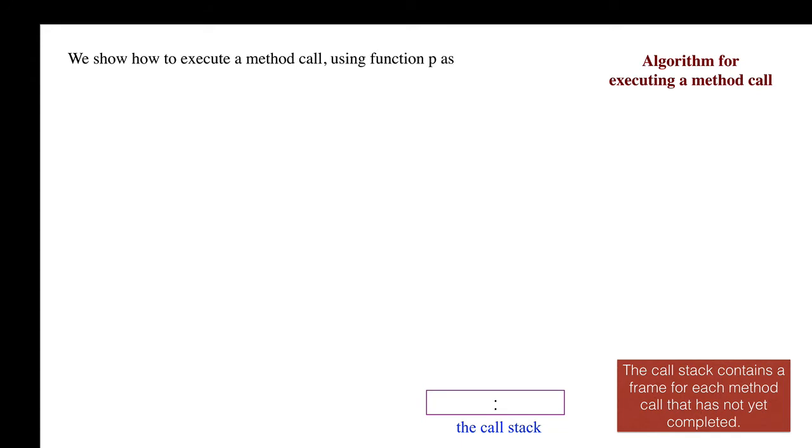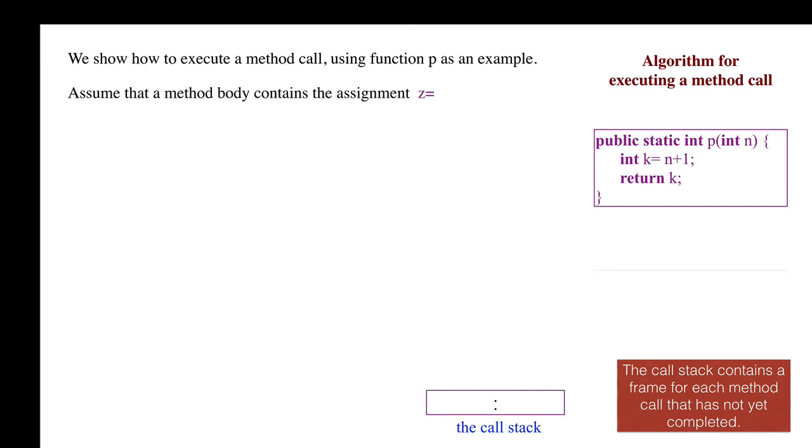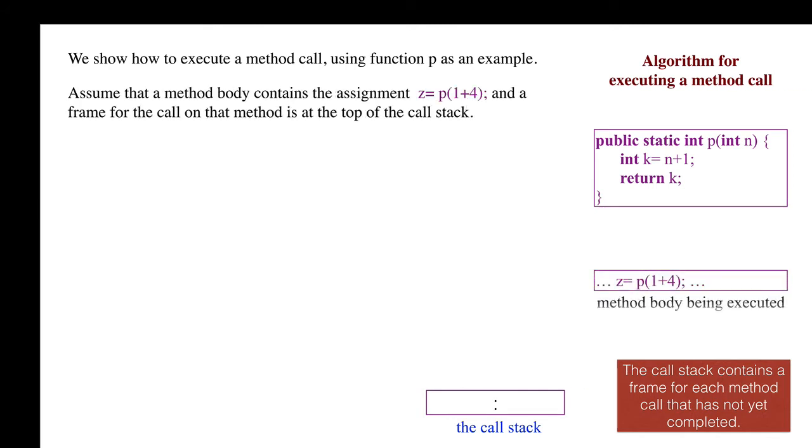We show how to execute a method call using function p as an example. Assume that a method is being executed and it contains the assignment z equals p. A frame for this method is at the top of the call stack. Note that it contains local variable z. The function call p is to be carried out.